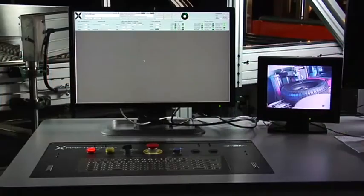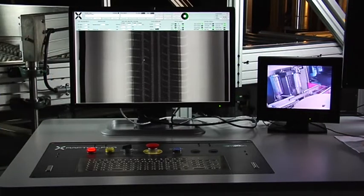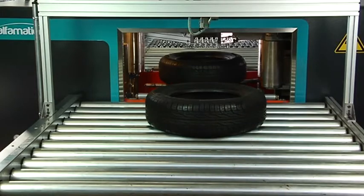Then the x-ray camera acquires the image and displays it on the HMI. Finally, the tire exits the cabin, waiting for the pass-fail marking.